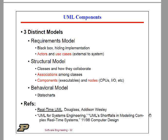There are a number of books and online tools that you can use for reference, including some implementations and open source tools. The requirements model is a black box model that hides the implementation, and what the requirements deal with are actors and use cases. The structural model addresses classes and how they collaborate, and these red items are the formal components of the modeling language.